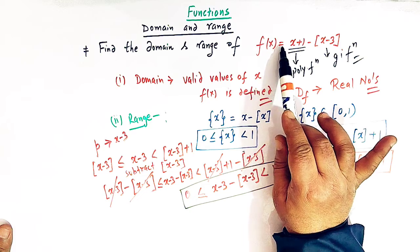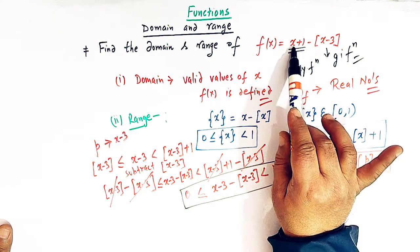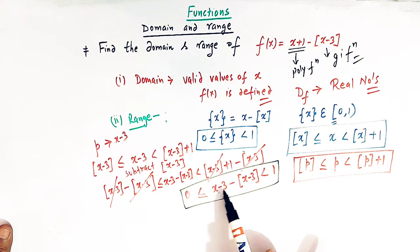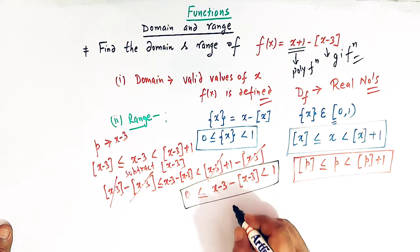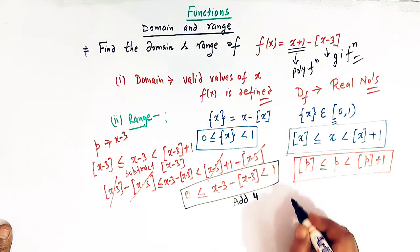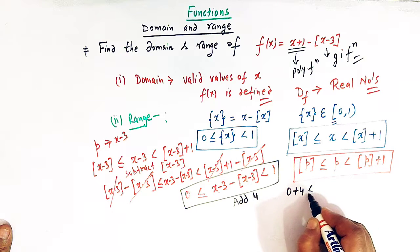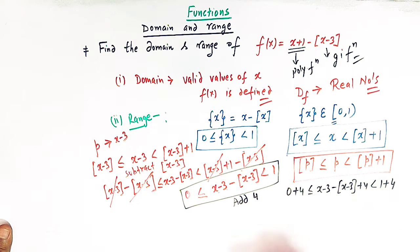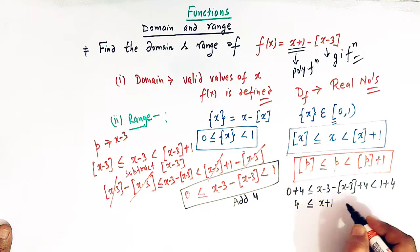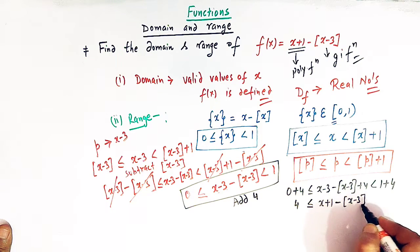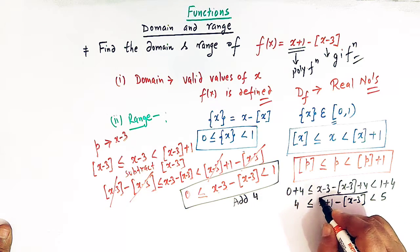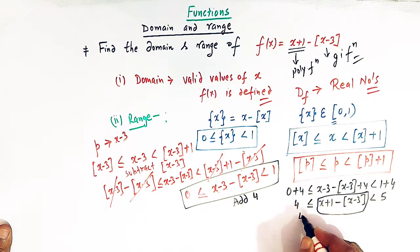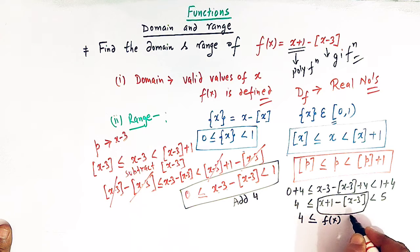Now f(x) = x + 1 - ⌊x - 3⌋. To get x + 1 in the inequality, we add 4 throughout. So we get: 0 + 4 ≤ (x - 3) - ⌊x - 3⌋ + 4 < 1 + 4, which gives us: 4 ≤ x + 1 - ⌊x - 3⌋ < 5. We can see that this expression is equal to f(x), so we have 4 ≤ f(x) < 5.